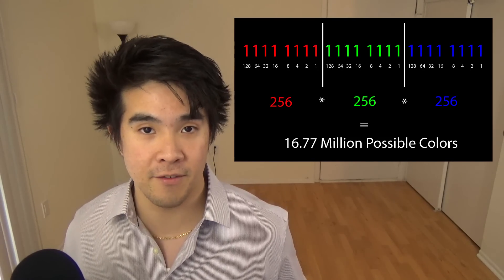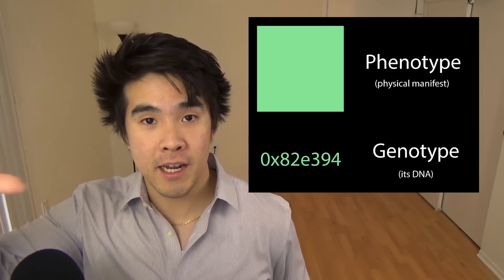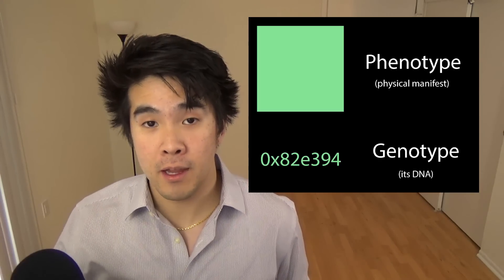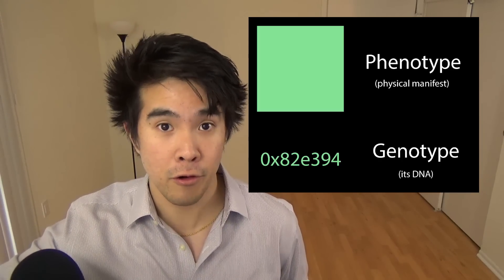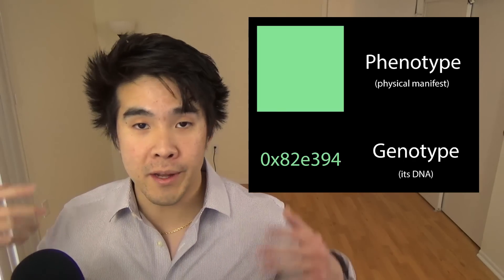Meaning that you can have 256 times 256 times 256 possible colors in the 24-bit space. This comes out to 16.7 million colors. So, now that we know the problem of trying to get the computer to display green, we know the phenotype in the manifestation of the color green, and we know the genotype as 24-bit color, we can begin our algorithm.